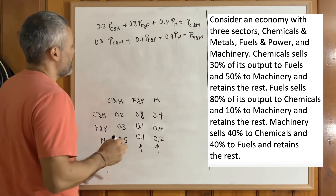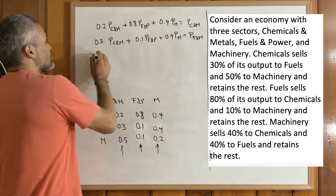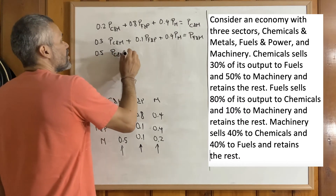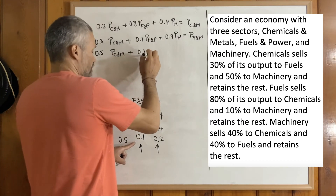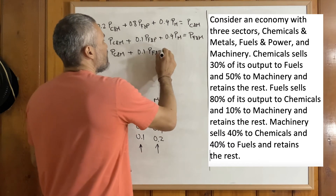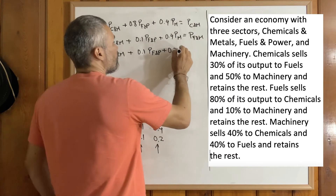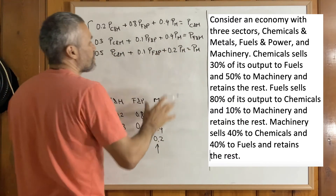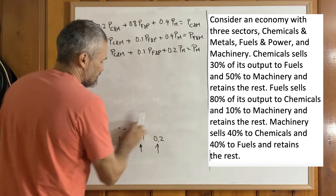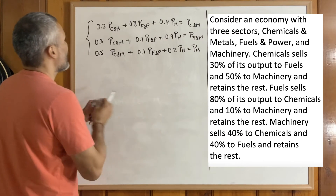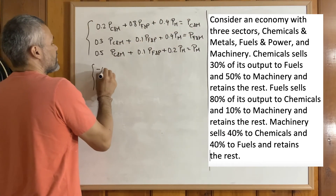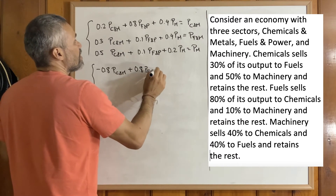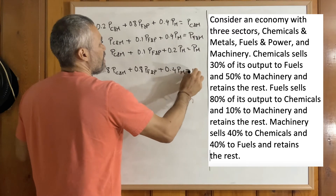The last equation comes from the machinery sector: its expenses are equal to 0.5·P(C&M) + 0.1·P(F&P) + 0.2·P(M), and this sum must equal the total profit P of M. Moving all terms to the left, this system reduces to a homogeneous system. We get: −0.8·P(C&M) + 0.8·P(F&P) + 0.4·P(M) = 0, and similarly for the other two equations.